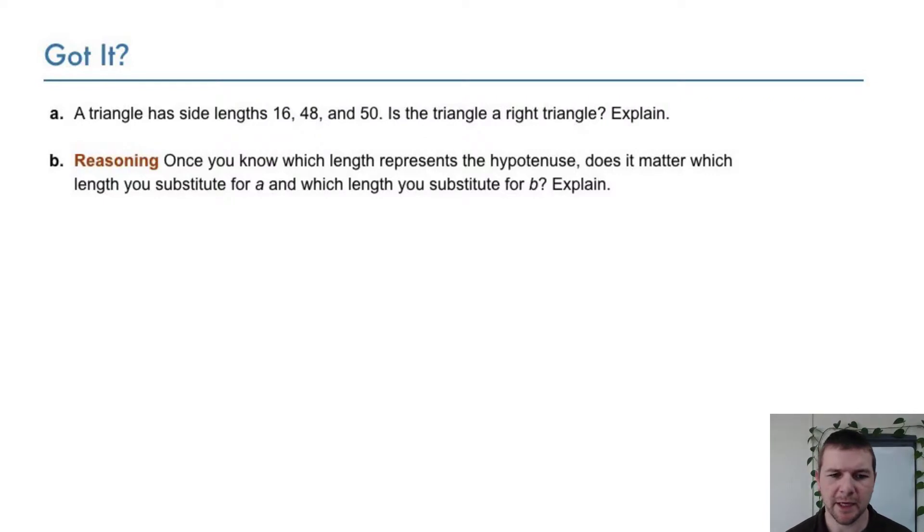Your turn. Part a: A triangle has side lengths 16, 48, and 50. Is the triangle a right triangle? Explain. Part b: A reasoning item. Once you know which length represents the hypotenuse, does it matter which length you substitute for a and which length you substitute for b? Explain.